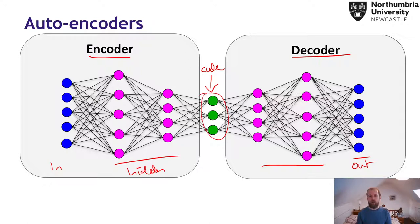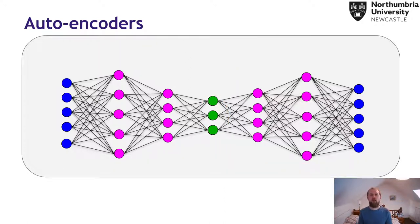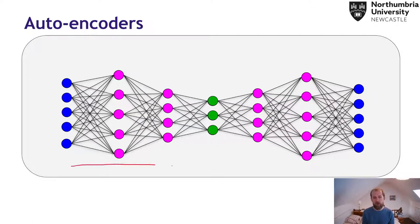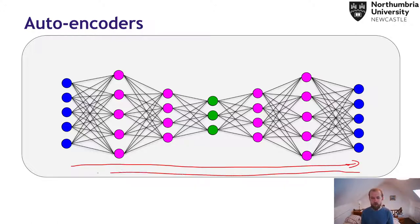We train this in a way that's called end-to-end — so this isn't two separate networks, it's all one network. When we do the forward pass we start from the input and go all the way to the end, and then the backpropagation likewise goes all the way back to the start.